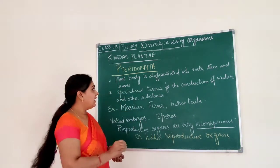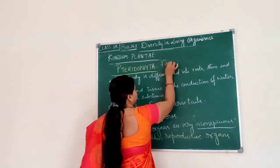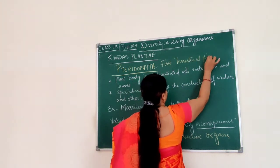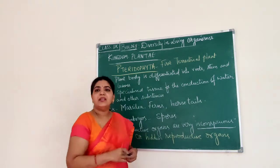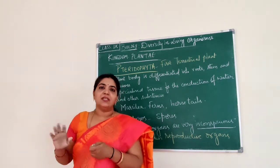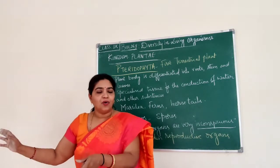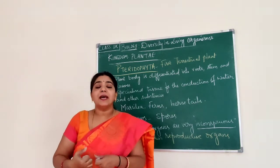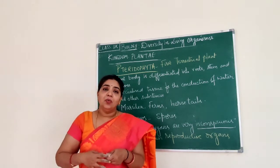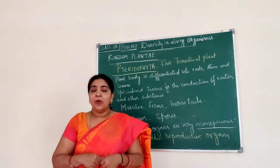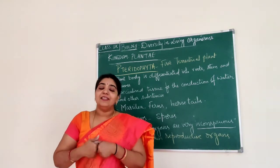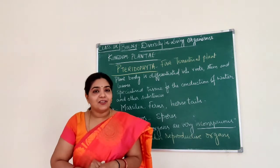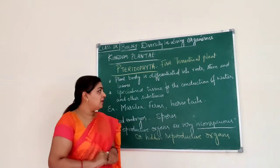Pteridophytes are the first terrestrial plants. Terrestrial means to live on the land. The other two divisions, thallophyte and bryophyte, live in or near water because they don't have vascular tissues. But pteridophytes could live successfully on the land because they are the first plants to develop vascular tissue.